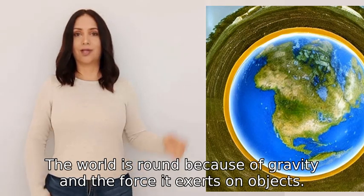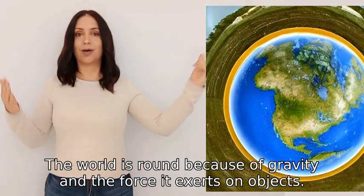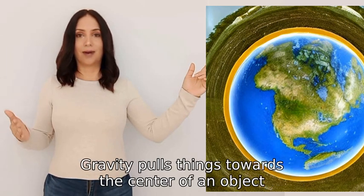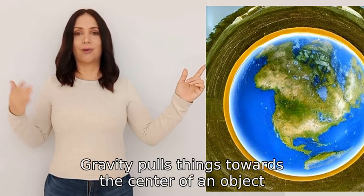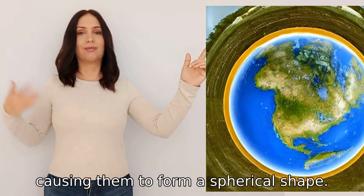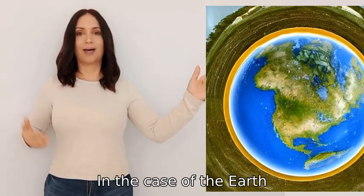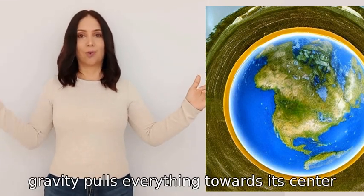The world is round because of gravity and the force it exerts on objects. Gravity pulls things towards the center of an object, causing them to form a spherical shape. In the case of Earth, gravity pulls everything towards its center.